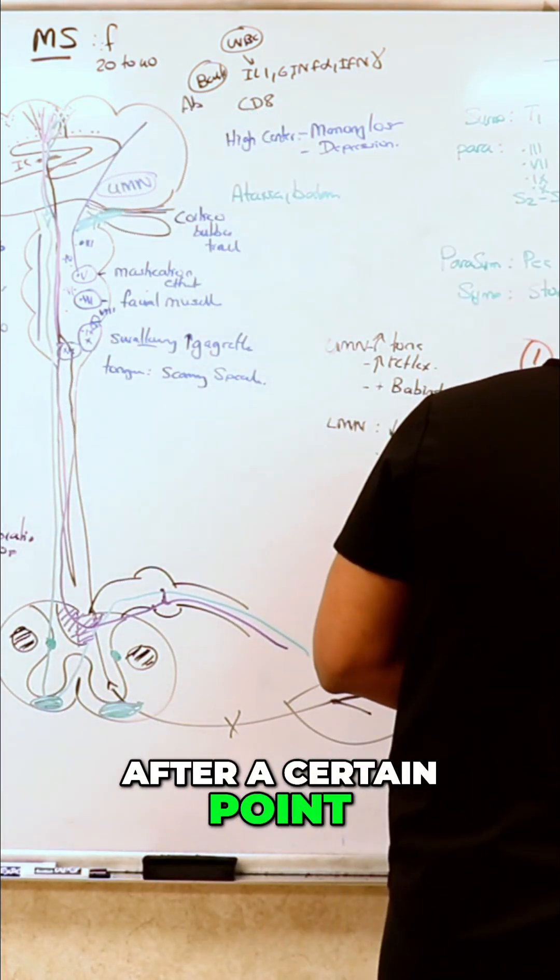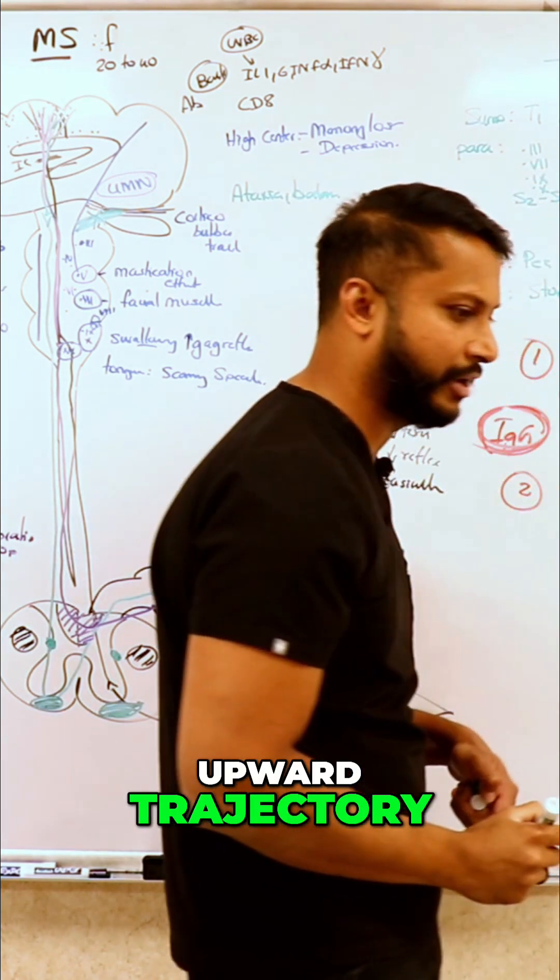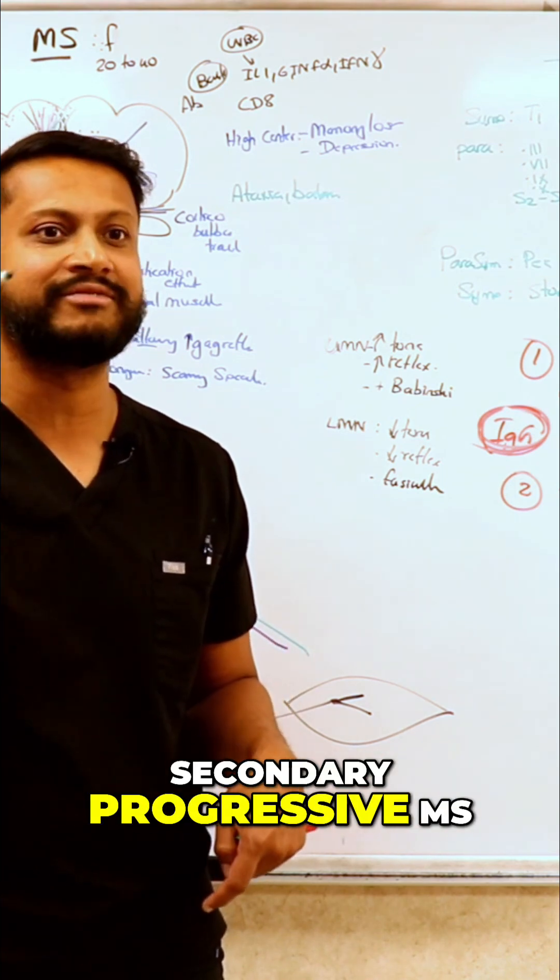Sometimes, after a certain point, there's no more relapses and remissions. It's just a constant upward trajectory. What is that known as?